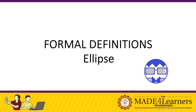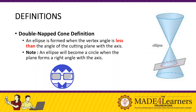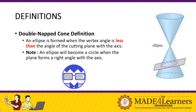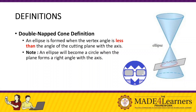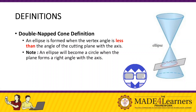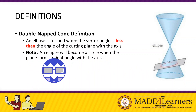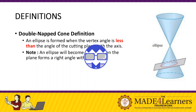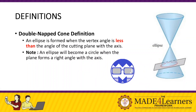Definition number one is the double nappe cone definition. Remember in our first week studying the double nappe cone or double circular cone, we learned that an ellipse is formed when the vertex angle is less than the angle of the cutting plane with the axis.